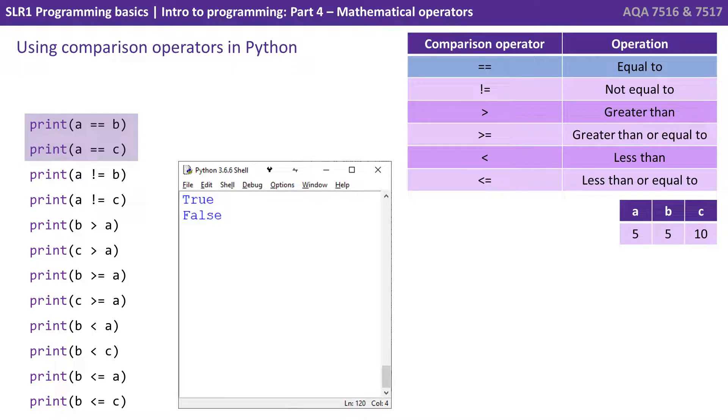Let's look at some comparison operators. So here in the right hand corner we have a little table, a is going to equal 5, b is 5, and c is 10. So if we say print a equals b, and a equals c, we get true, and we get false, because a and b are the same, but a and c aren't.